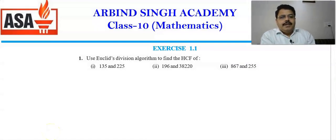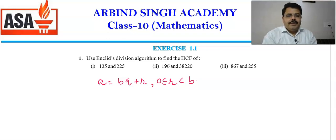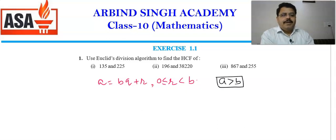In Euclid's Division Lemma, if a and b are any two real numbers such that a is greater than b, then a can be expressed as bq plus r, where r is greater than or equal to zero and less than b. Based on this theory, we will discuss how the remaining questions can be solved. The condition is that a should be bigger than b. Here b is the divisor, q is the quotient, and r is the remainder.